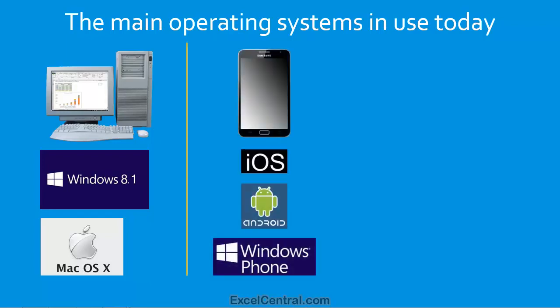Next, we have the smartphones. The iOS operating system is only used on Apple's iPhone. The second most widely used operating system, at the moment, is the Android operating system. And the Windows Phone operating system is a relative newcomer to the market.